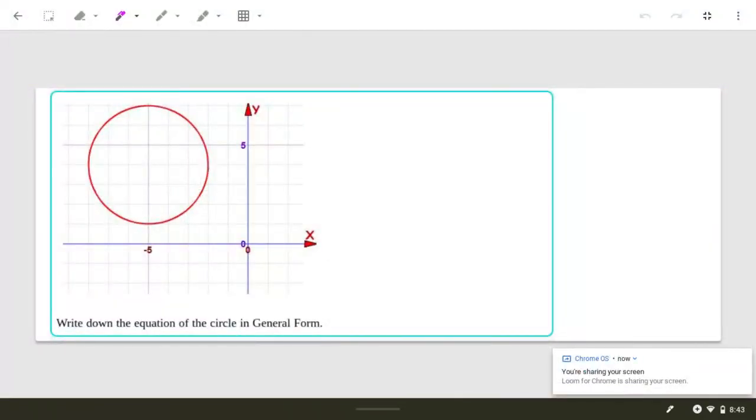Alright, so this is number 4 from our circles assignment, and it asks us to write the equation of this circle in general form.